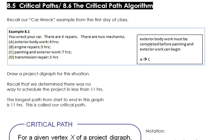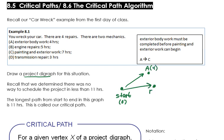We know that the exterior bodywork must be completed before painting and exterior work can begin. In other words, A has to be totally done before C is finished. If I was going to draw a project digraph, I know that I would start with a start. I could do task A, because there's nothing that has to be completed before A. And I could do task B, because there's nothing that needs to be completed before B. But I can't do C yet, because A has to be done before C. So C would need to go out here after task A.